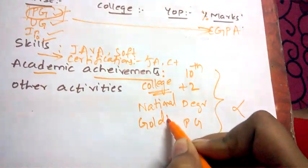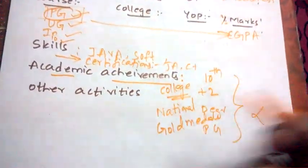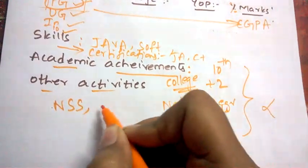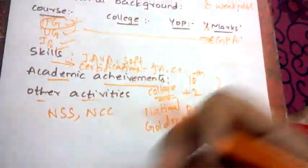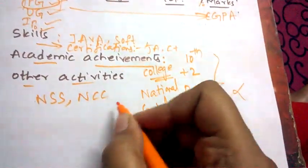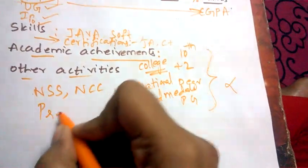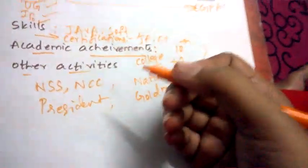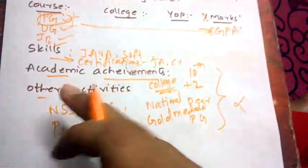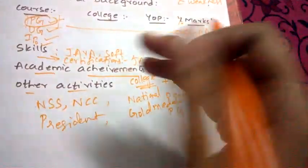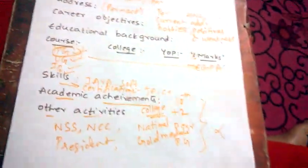Under other activities, mention things beyond your education — such as being an NSS or NCC candidate, being a college president, a union leader, or any other extracurricular activities you did during college.